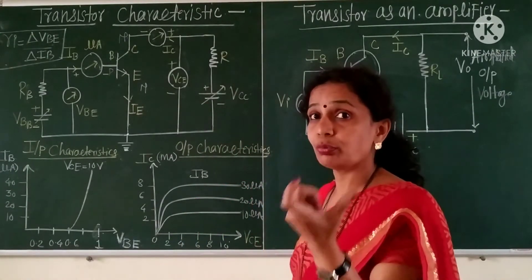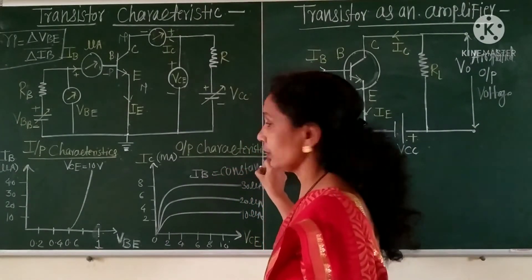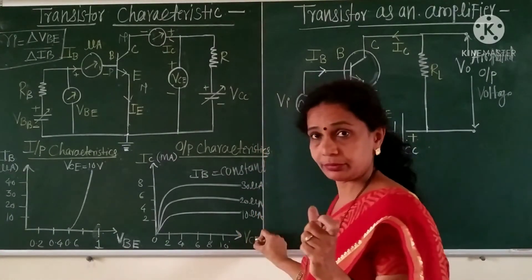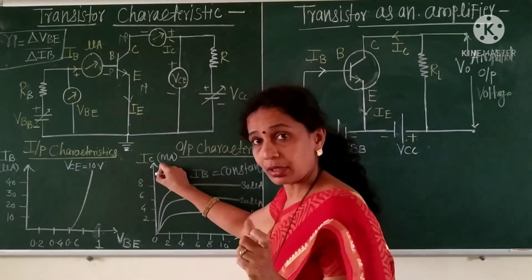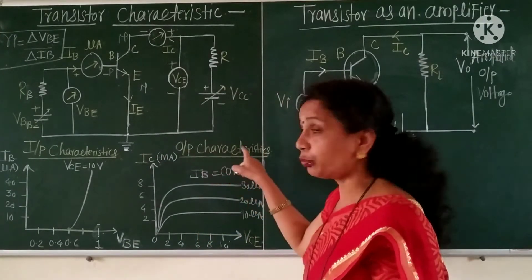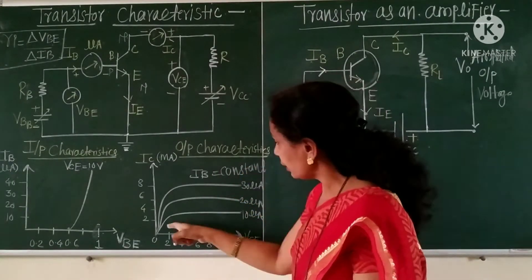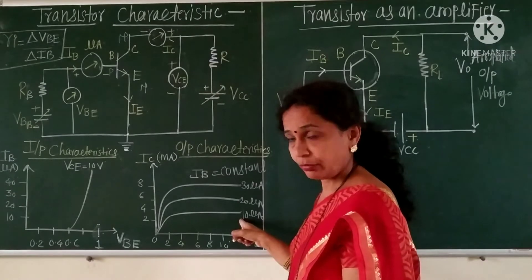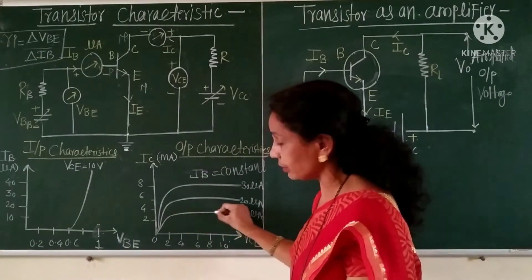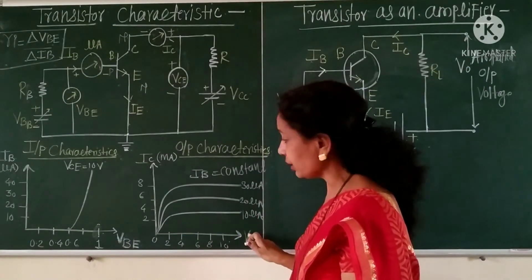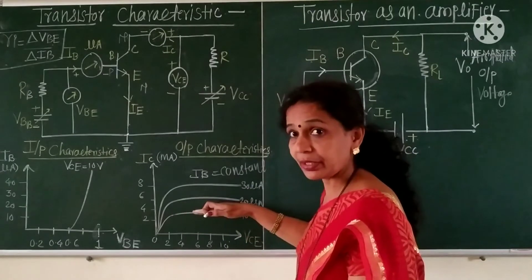In order to study the output characteristics, we have to keep IB constant. Therefore, the variation of collector emitter voltage to the collector current is called output characteristics when IB is kept constant. For the first case, when IB is equal to 10 microampere, the nature of the graph is like this — as voltage VCE increases, the current increases, then it becomes maximum at this point.